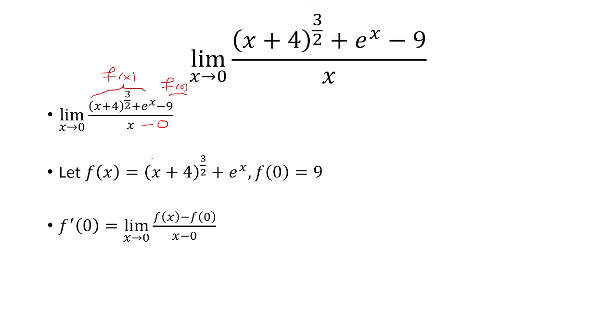So really, we could just take the derivative of our function, which is 3 halves times x plus 4 raised to the 1 half power plus e to the x. And then I can plug in x equals 0 here and get 4 as my answer. And so that is my answer.